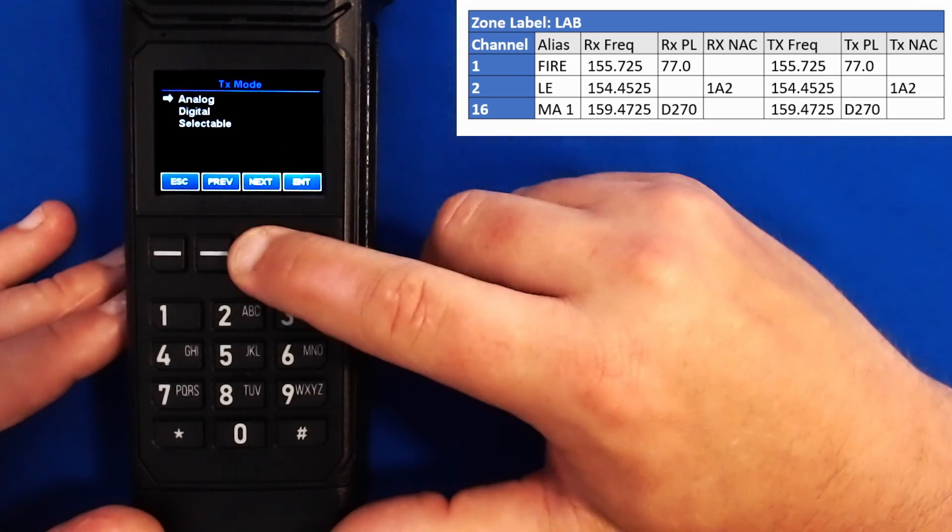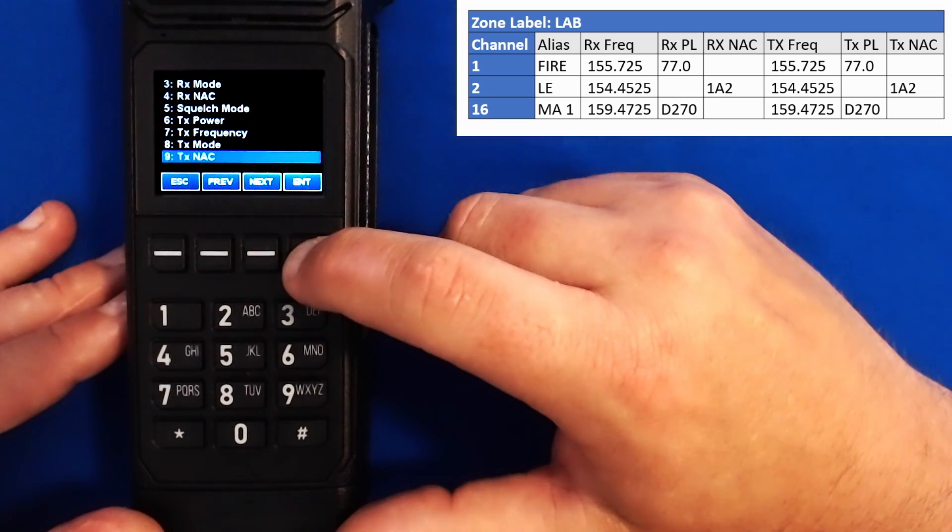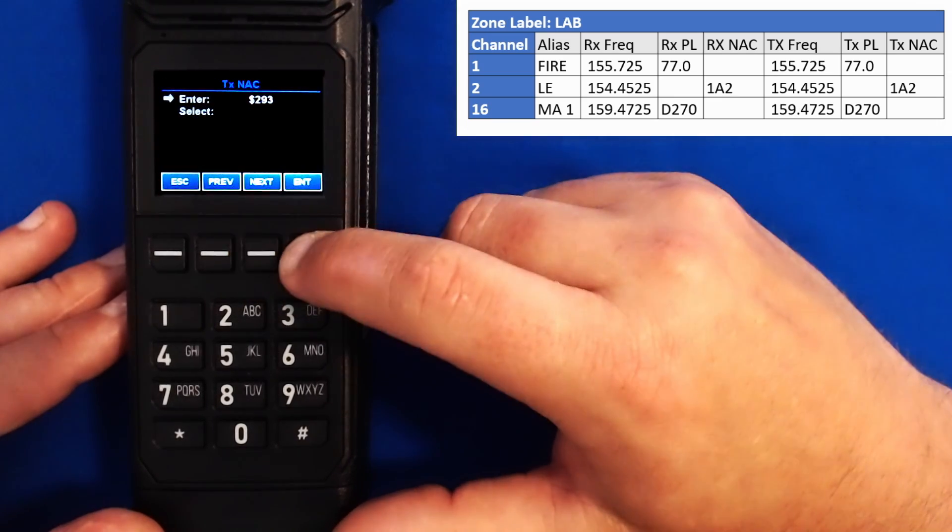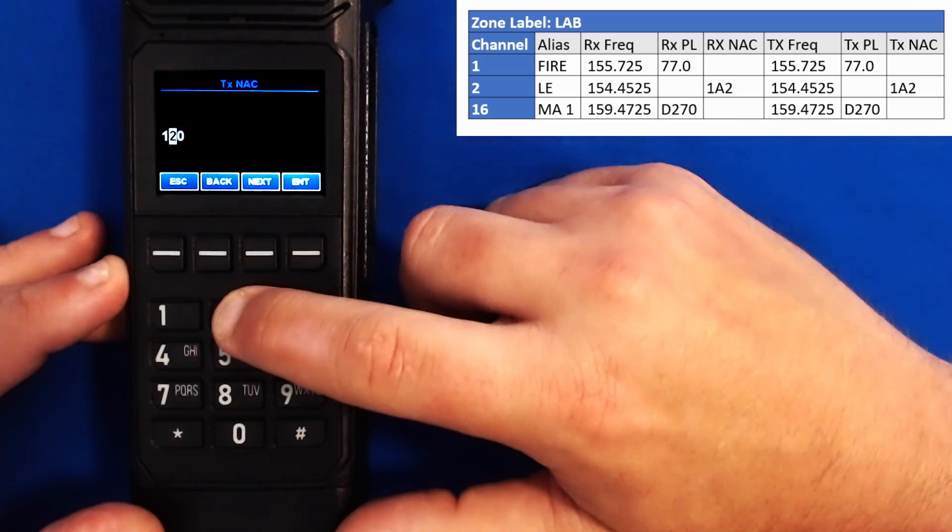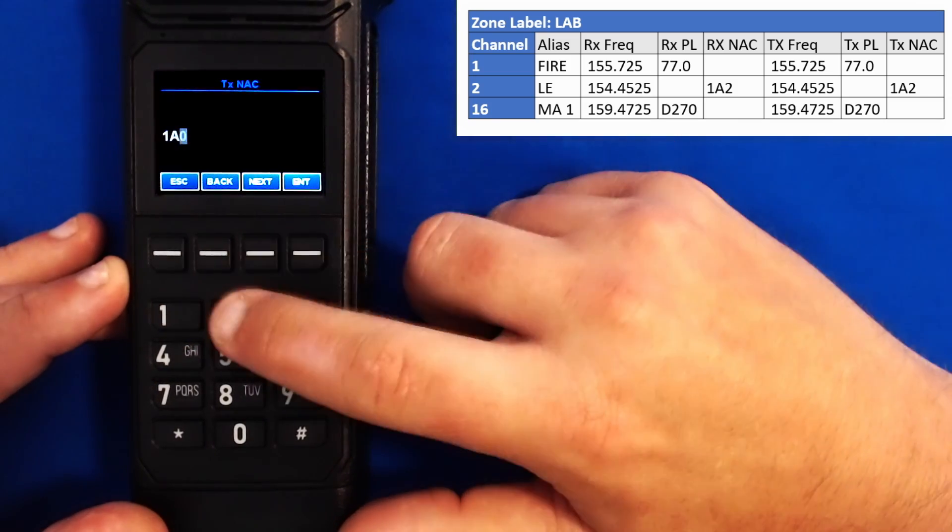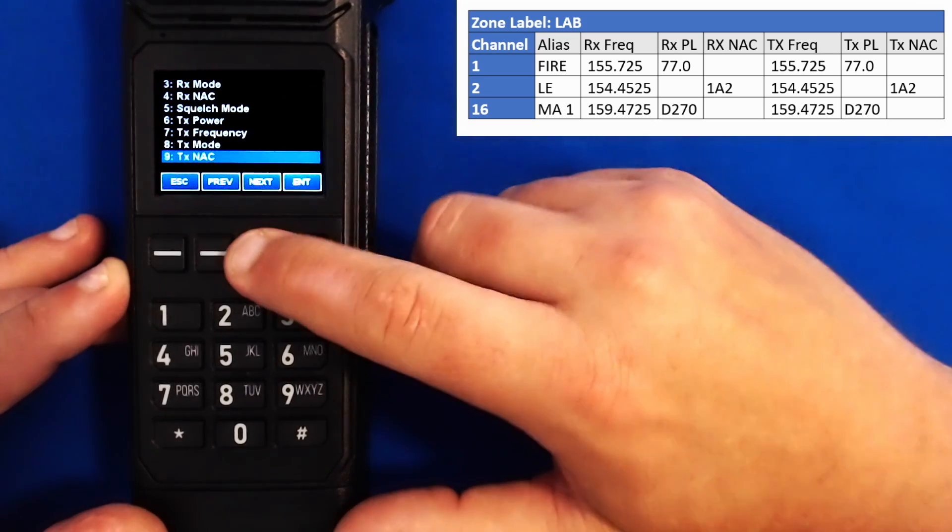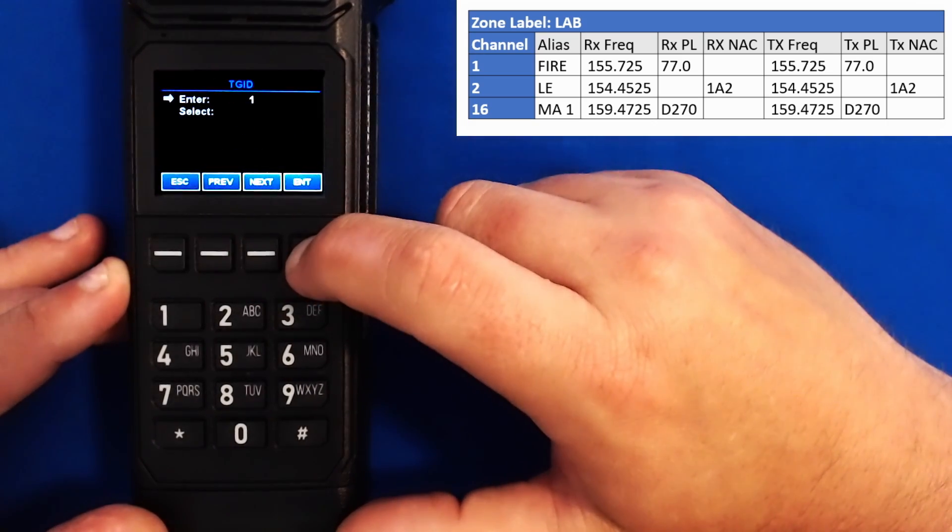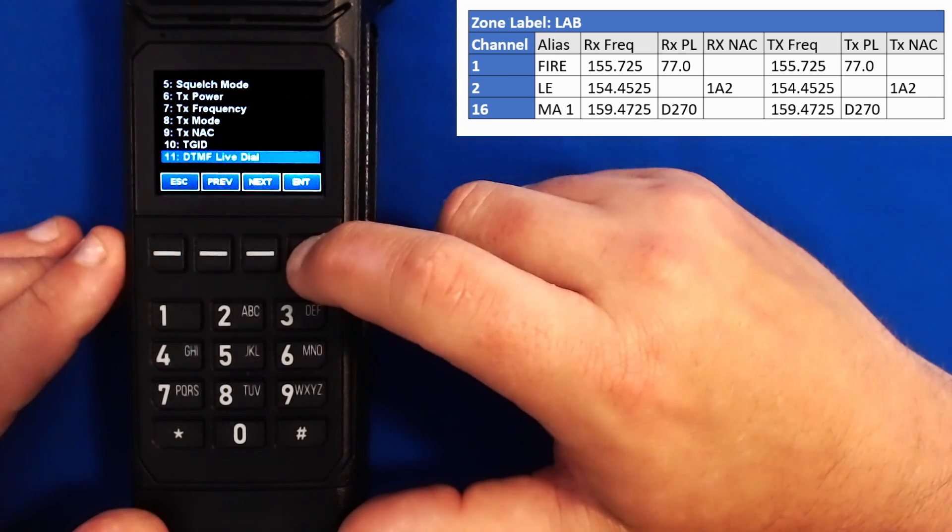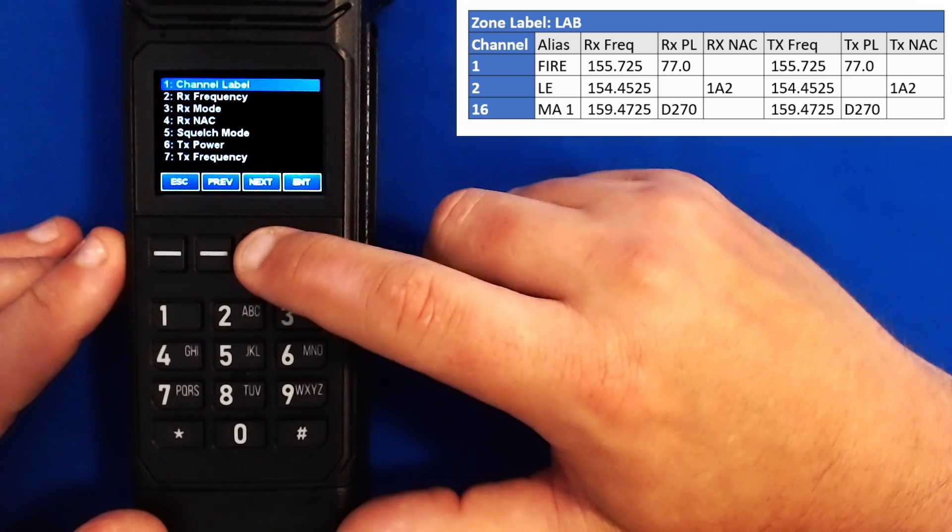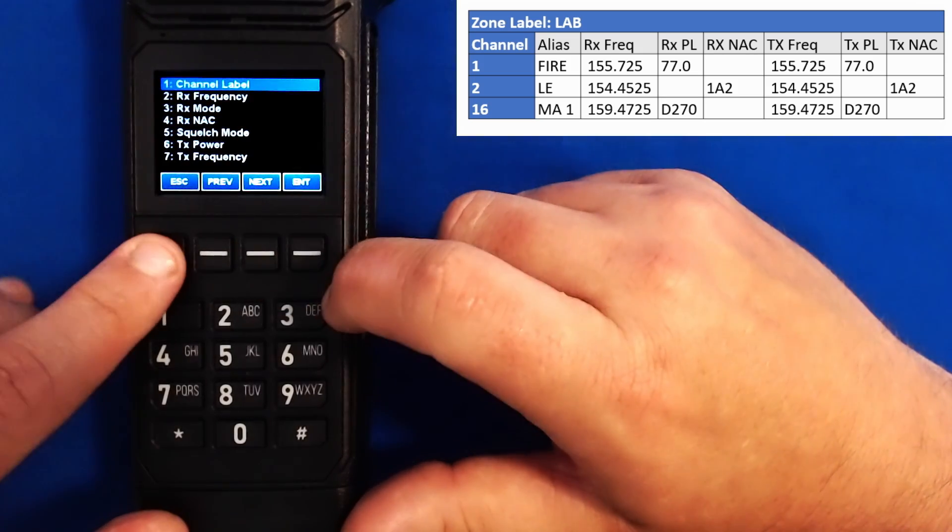We'll do a transmit mode. We'll have a NAC code here, so we'll select digital. Go to our transmit NAC. Enter, clear. 1, A, next, 2. Our talk group ID 1 is fine. Our DTMF live dial is fine, and if I press next again, I switch back to channel label, and this channel is done. I'll hit escape.